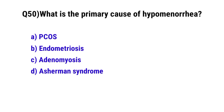Question number fifty: What is the primary cause of hyponatremia. The correct option is D, Addison's disease.